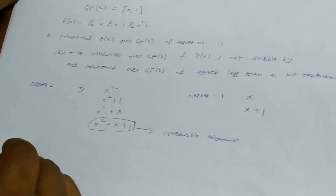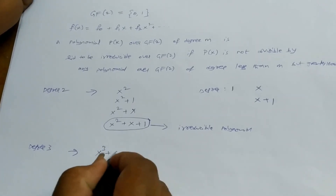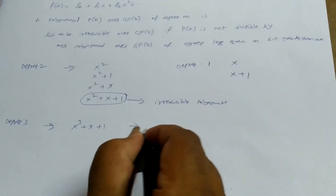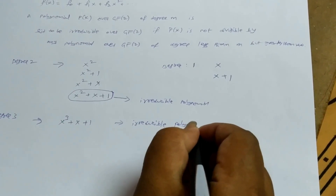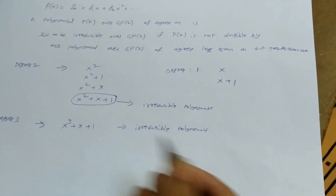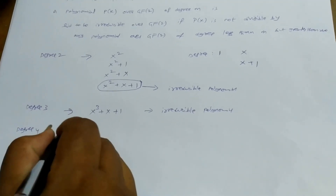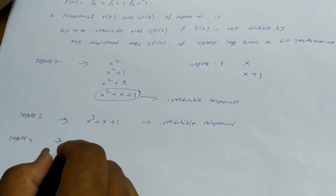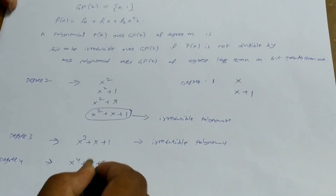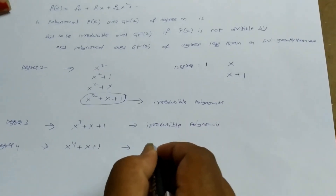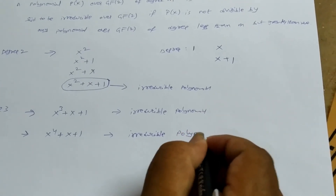Similarly, for degree 3, among the different possibilities, the polynomial X³+X+1 is irreducible. For representation we are considering this, and for degree 3 there are other irreducible polynomials as well. For degree 4 — where degree means the highest power in the polynomial — X⁴+X+1 is irreducible, and there are additional representations for degree 4.